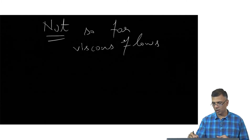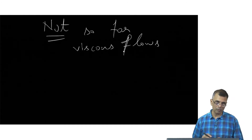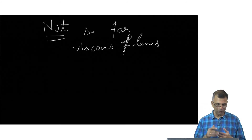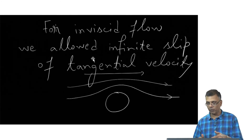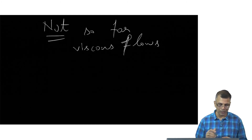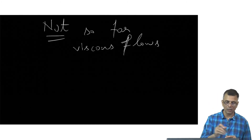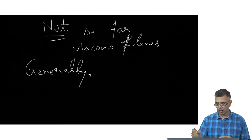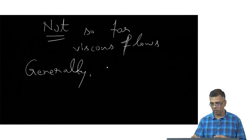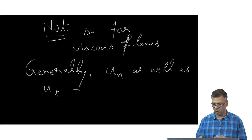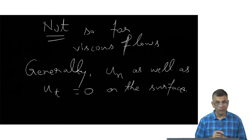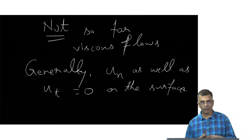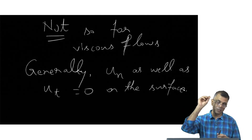This is intuitively obvious. The whole point of viscosity is that the fluid sticks — you cannot allow for as much slip as you want. If it was honey flowing past a sphere, this is intuitively obvious. So you insist generally that U_normal as well as U_tangential equal zero on the surface when viscosity is included. You know this, for instance, on a fan blade — ceiling fans.